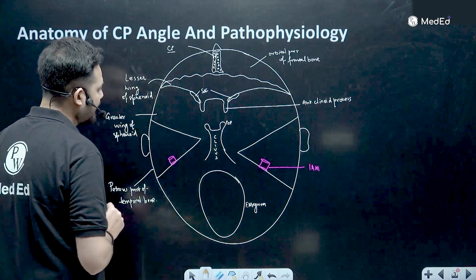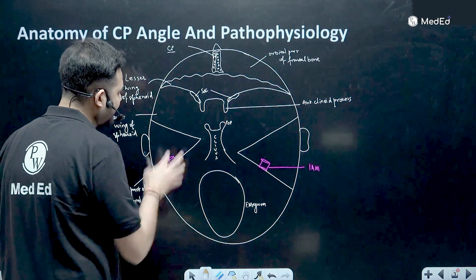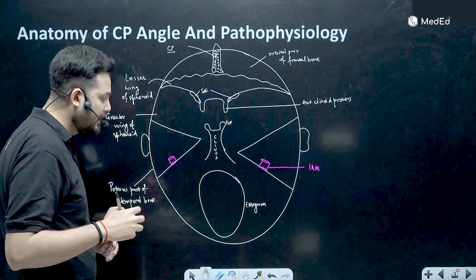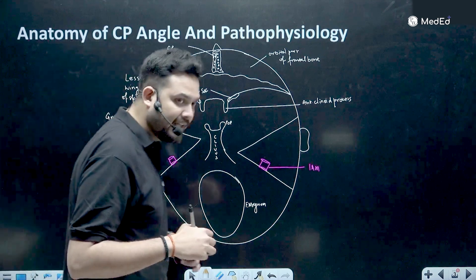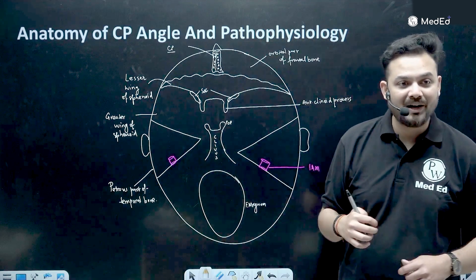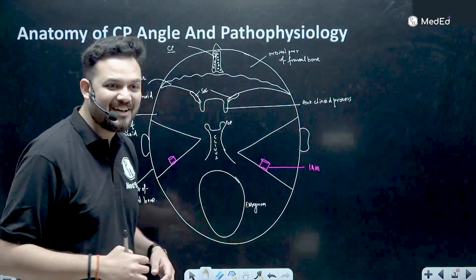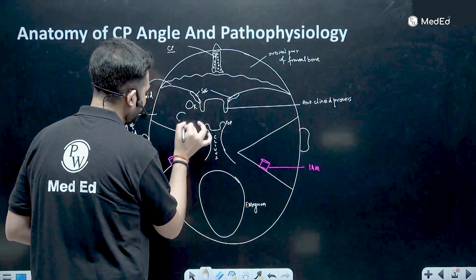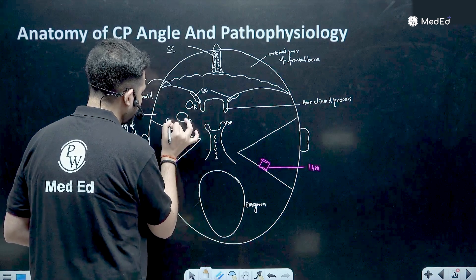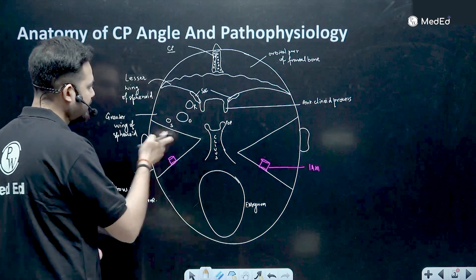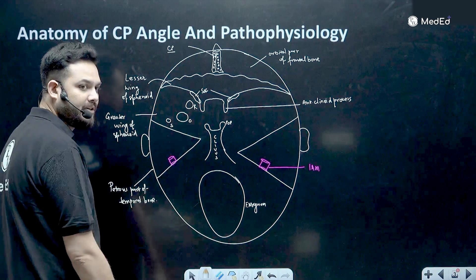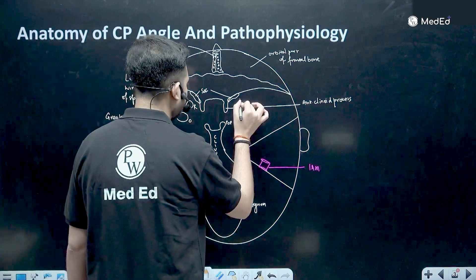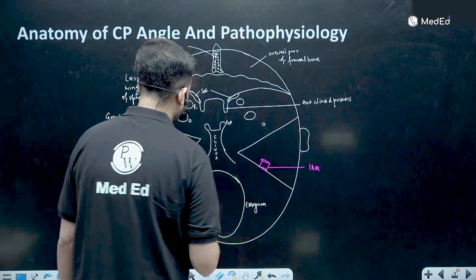We have done the internal acoustic meatus. Now in the middle cranial fossa there are three important openings — three foramina. You know that there is a character in the series Friends named Ross. So you can remember there are three openings here which are ROSS: rotundum, ovale, and spinosum. So there is foramen rotundum, foramen ovale, and foramen spinosum — the same goes on both sides.